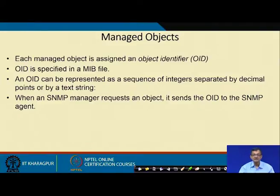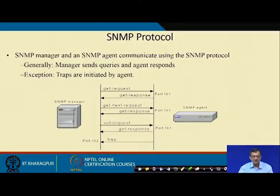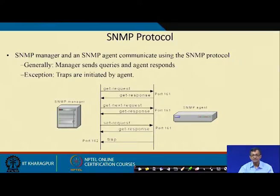Each managed object is assigned an Object Identifier (OID), specified in a MIB file, represented as a sequence of integers separated by decimal points or a text string. When the SNMP manager requests an object, it sends the OID to the SNMP agent. Generally, the manager sends queries and agents respond. Exception traps are initiated by agents and pushed to the manager without any prior query.